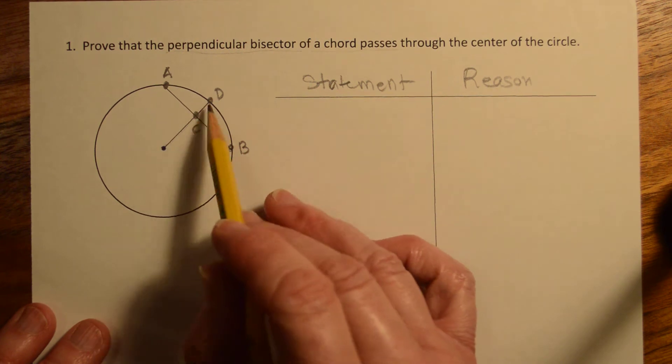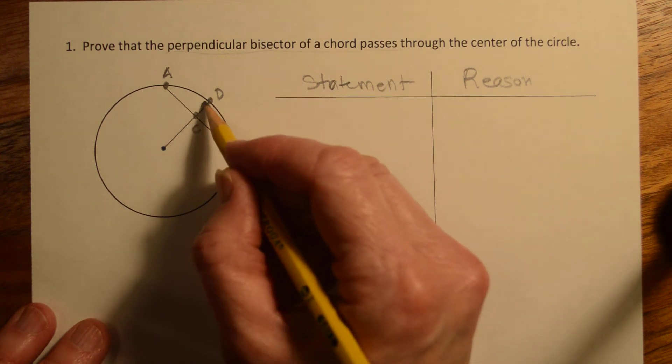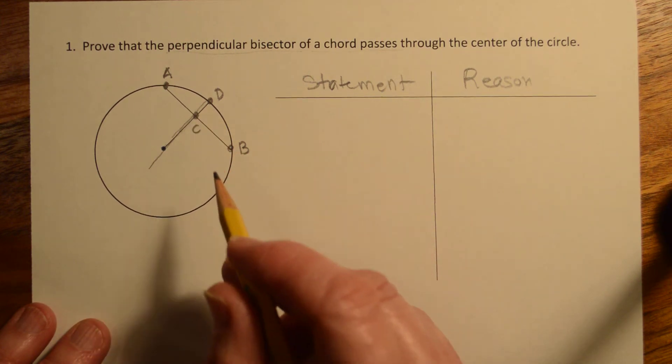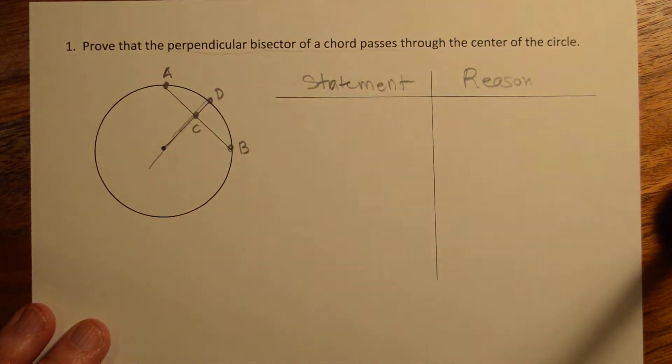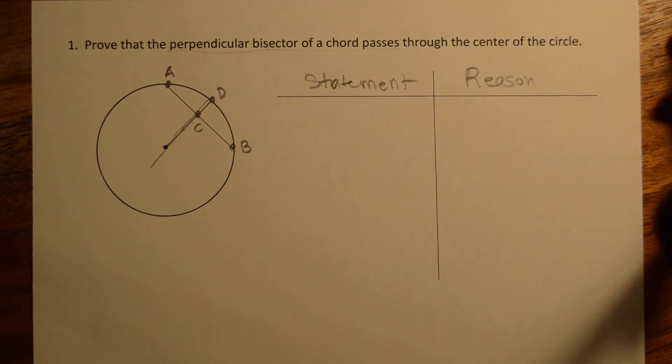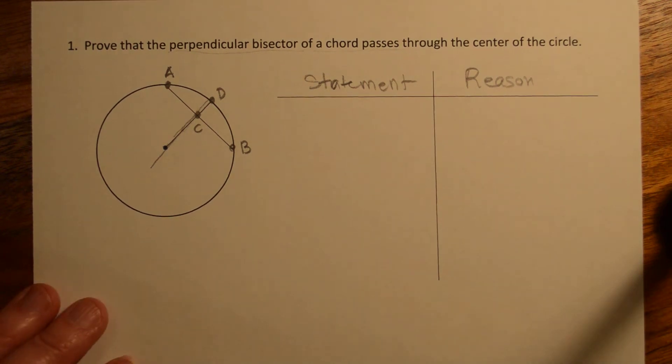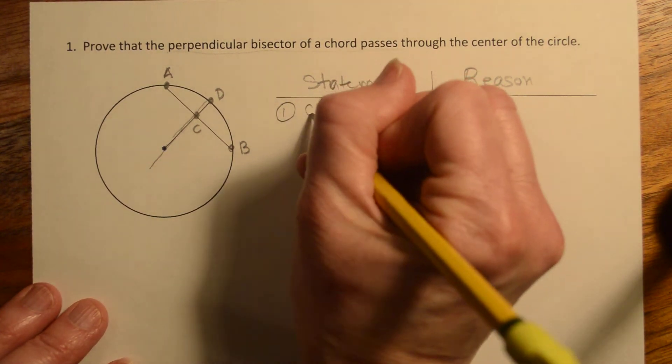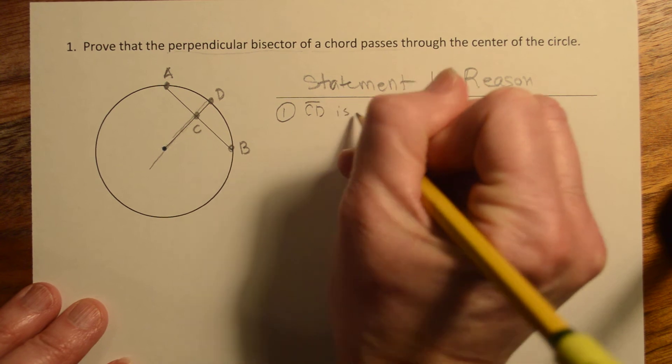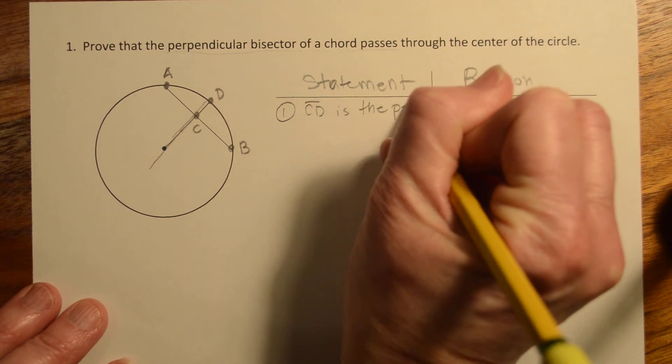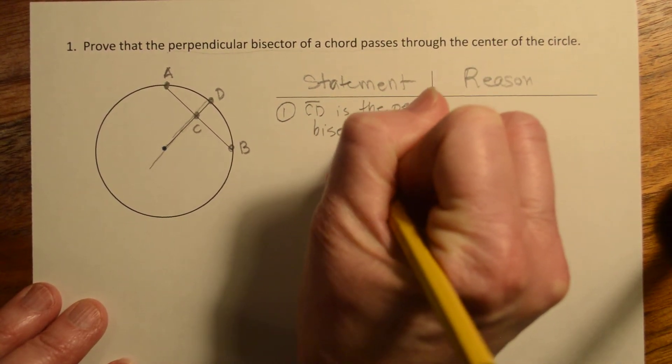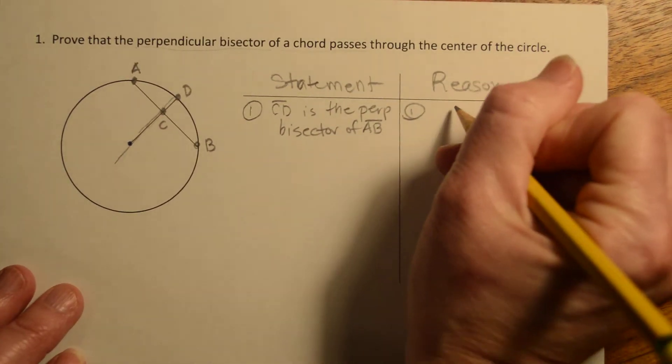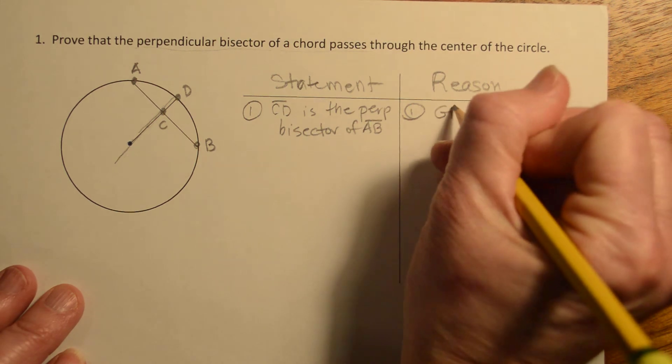What we don't know is that it actually passes through. It could potentially do something like this and just kind of bypass it ever so slightly. So that's what we're trying to prove is that it has to be in the center of the circle. Okay, so statement one, we're going to have CD is the perpendicular bisector of AB. Reason, this is Nate's job right here, given.